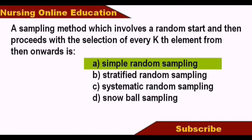In stratified random sampling, we divide into groups and select from each. For snowball sampling, you can select a researcher to begin the chain of referrals.